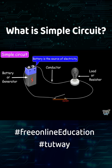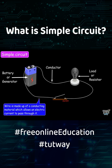The battery is the source of electricity. The wire is made up of a conducting material which allows an electric current to pass through it — for example, copper wire.